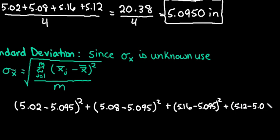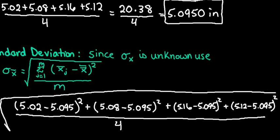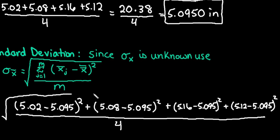For this process, if you have access to technology it makes things much easier, because with 100 samples you would never do this by hand. You can use Excel, Minitab, SPSS, or graphing calculators like the TI-84 or TI-Nspire. After summing those squared deviations, divide by m, the number of samples, which is four. Note that if you were looking for the variance you would stop there, but since we want the standard deviation we take the square root of the entire expression.